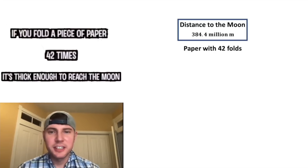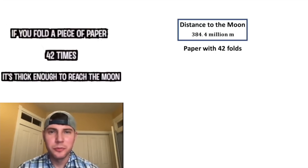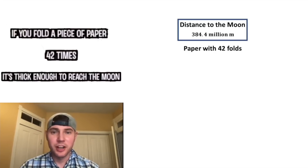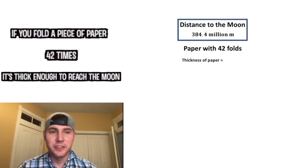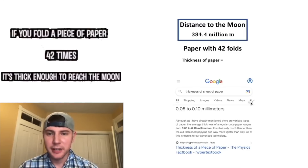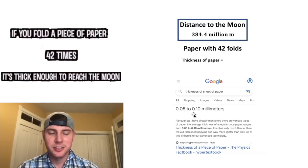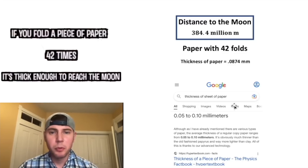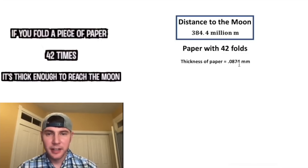Next, we've got to find the thickness of a piece of paper with 42 folds. First off, what is the thickness of a single piece of paper? If we Google that, it says 0.05 to 0.1 millimeters, so it's somewhere in this range. I will go with 0.0874 millimeters.